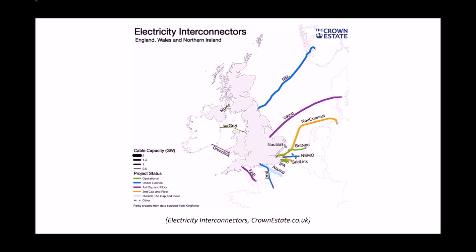Next we have our electricity interconnectors. Perhaps surprisingly, we actually import quite a significant amount of our electricity from other countries in Europe. For example, in the southeast of England we have the interconnector between France and England — France-Angleterre — providing electricity into the UK. The different thicknesses of the lines indicate how much energy we're capable of importing. The colour codes relate to something called cap and floor, meaning there are upper and lower limits on how much energy we can import through each interconnector. We'll discuss interconnectors again when we look at security of supply.